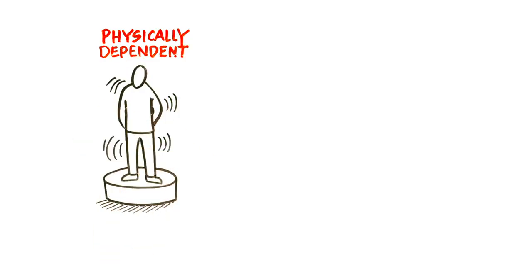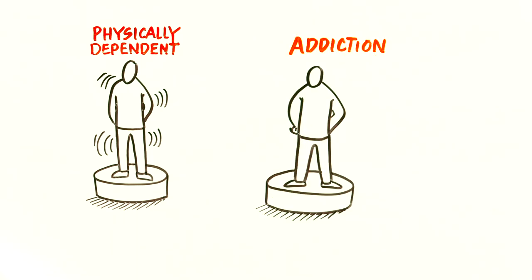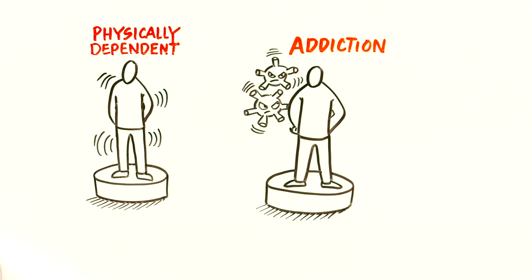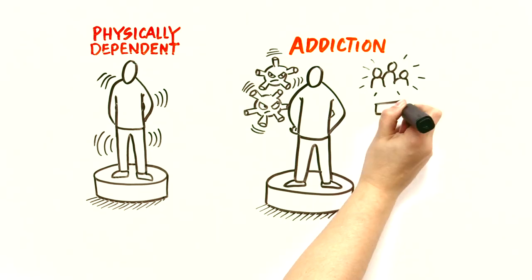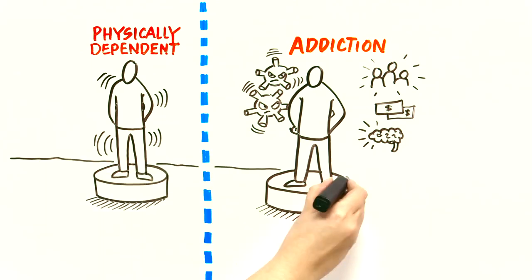Almost all patients who take opioids daily are physically dependent, in the sense that they will experience withdrawal symptoms if the opioid is suddenly stopped. This is not the same as addiction. People are said to be addicted to a drug when they feel a compulsion to keep taking the drug despite the harm it's doing to them. These harms can be social, financial, or psychological. I should point out that this line between physical dependence and addiction sounds clear, but it can be hard to delineate in the real world.